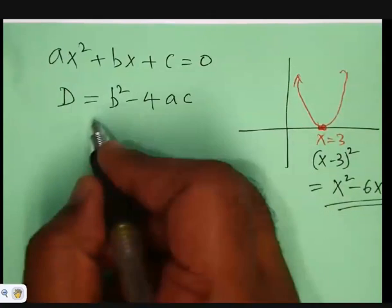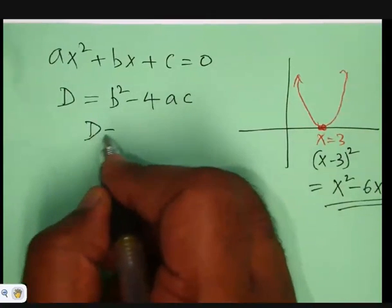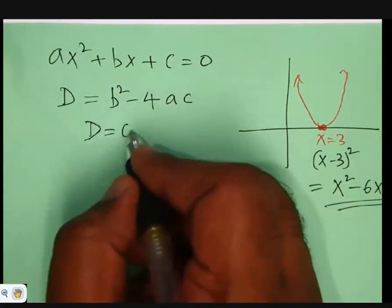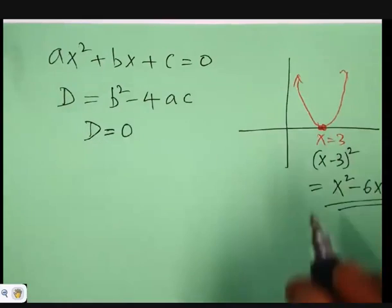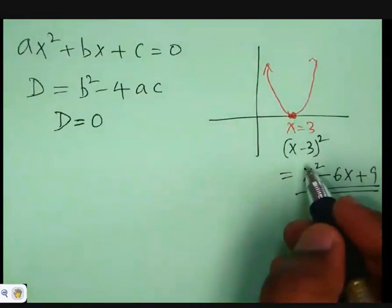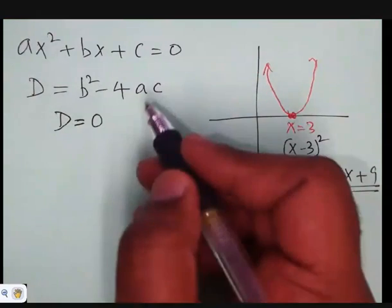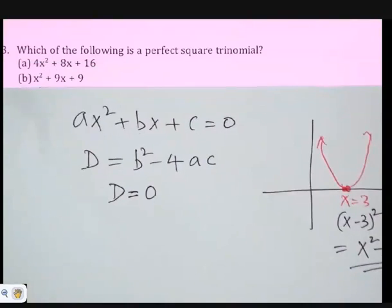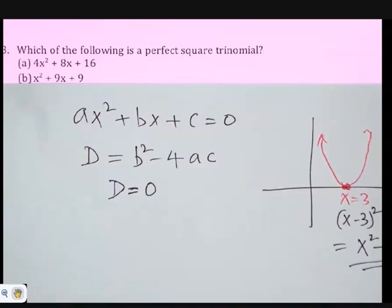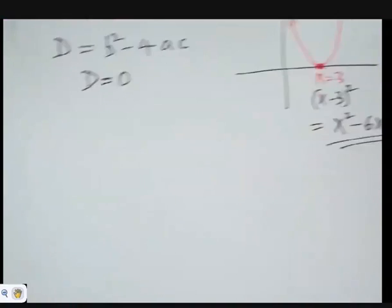What I'm saying is just find the discriminant, and if the discriminant is equal to zero, you get only one solution and that expression will be a perfect square trinomial. Let me show you. First one: 4x² + 8x + 16.